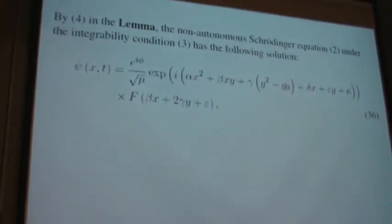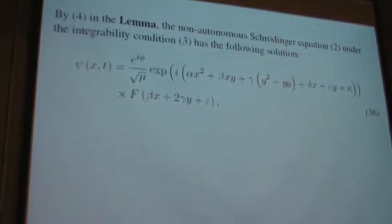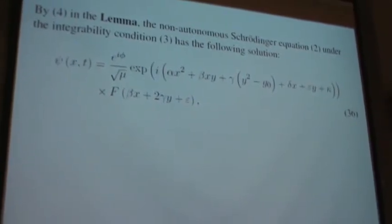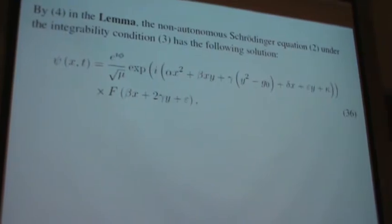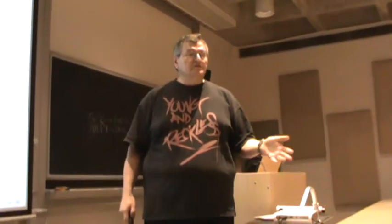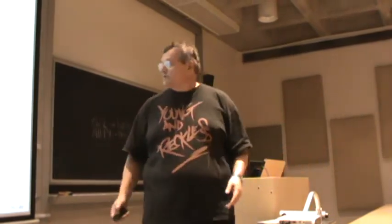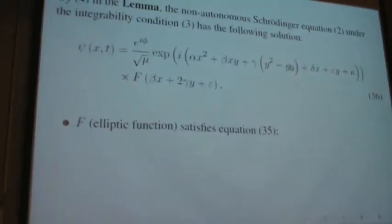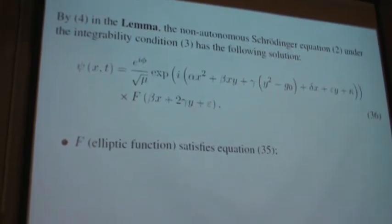But in general, it's for Jacobi elliptic transcendental function. So here you go, you take the standard solution, you make a transformation, this is how one soliton solution, or in the case of Jacobi elliptic function, better say nonlinear periodic wave, looks like. And F is this elliptic function, which satisfies the equation which was written before.